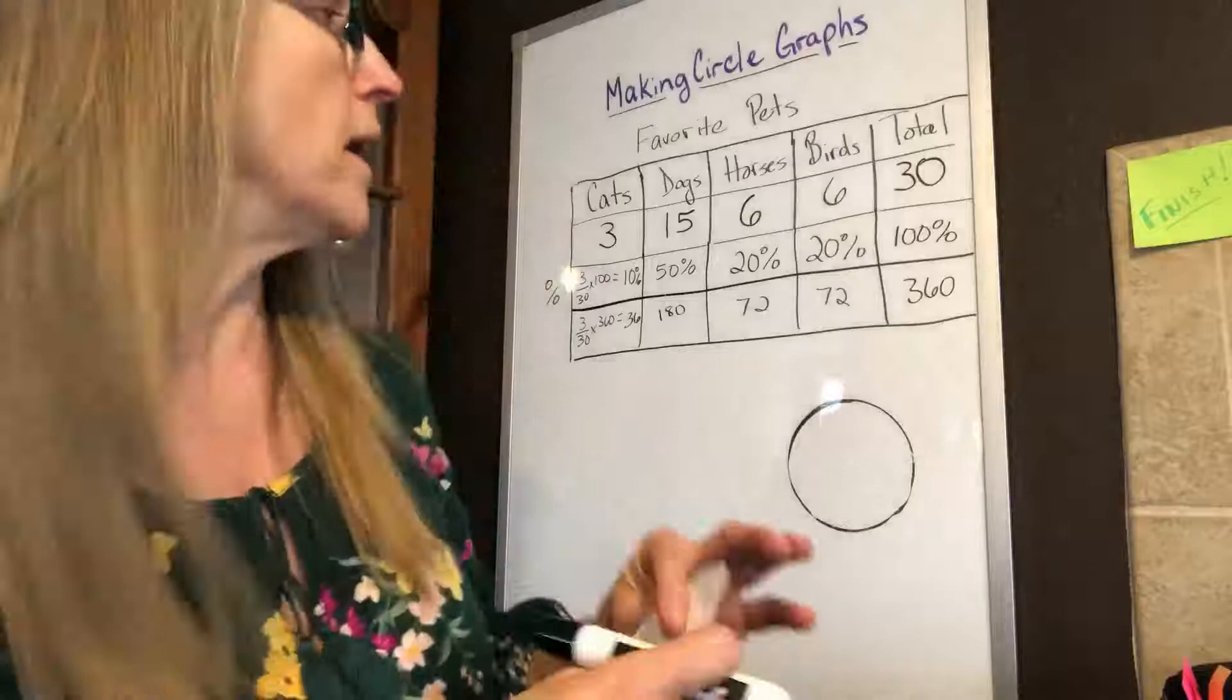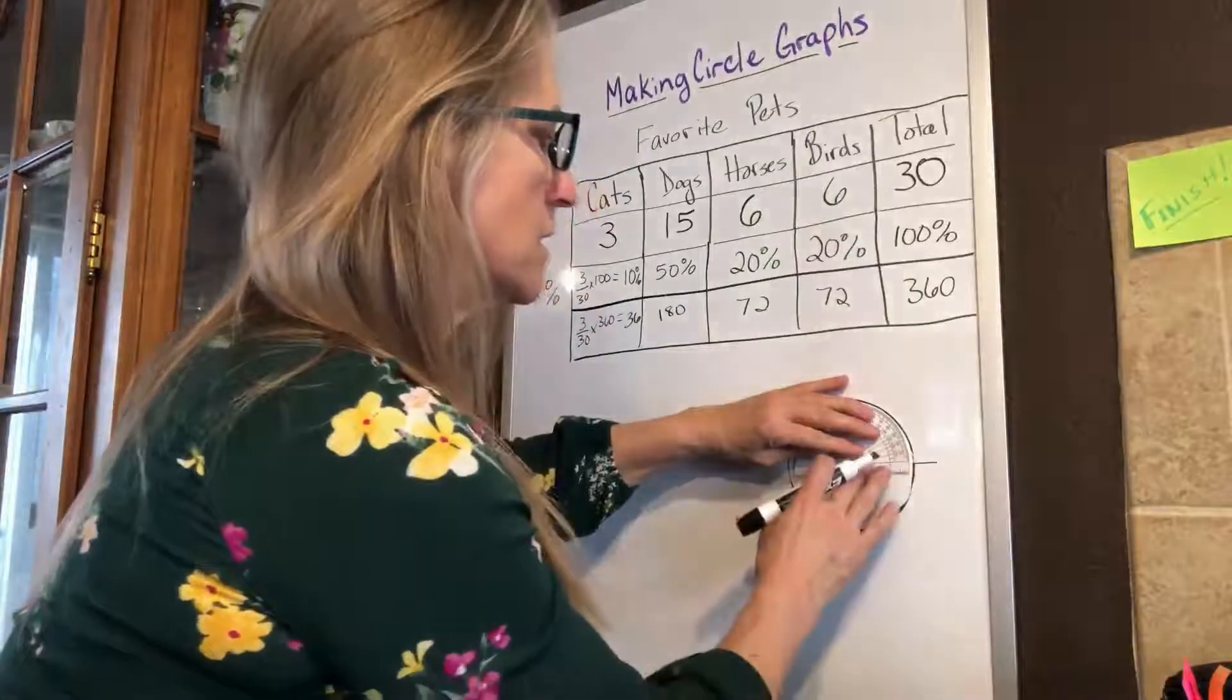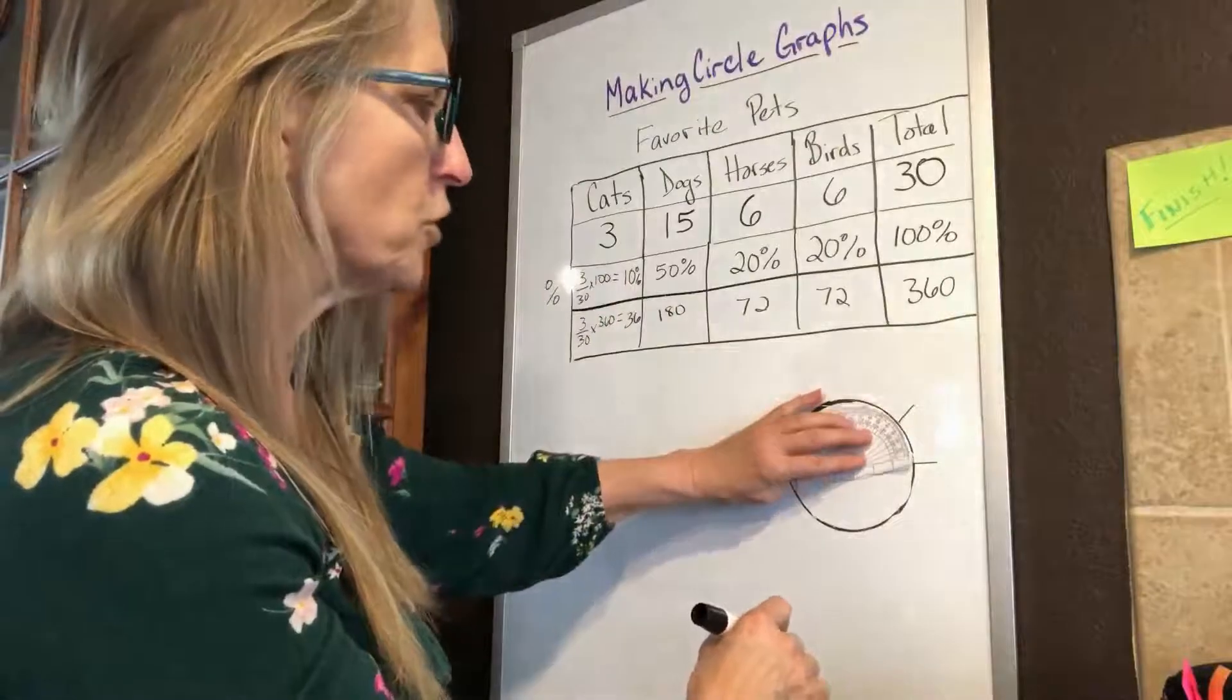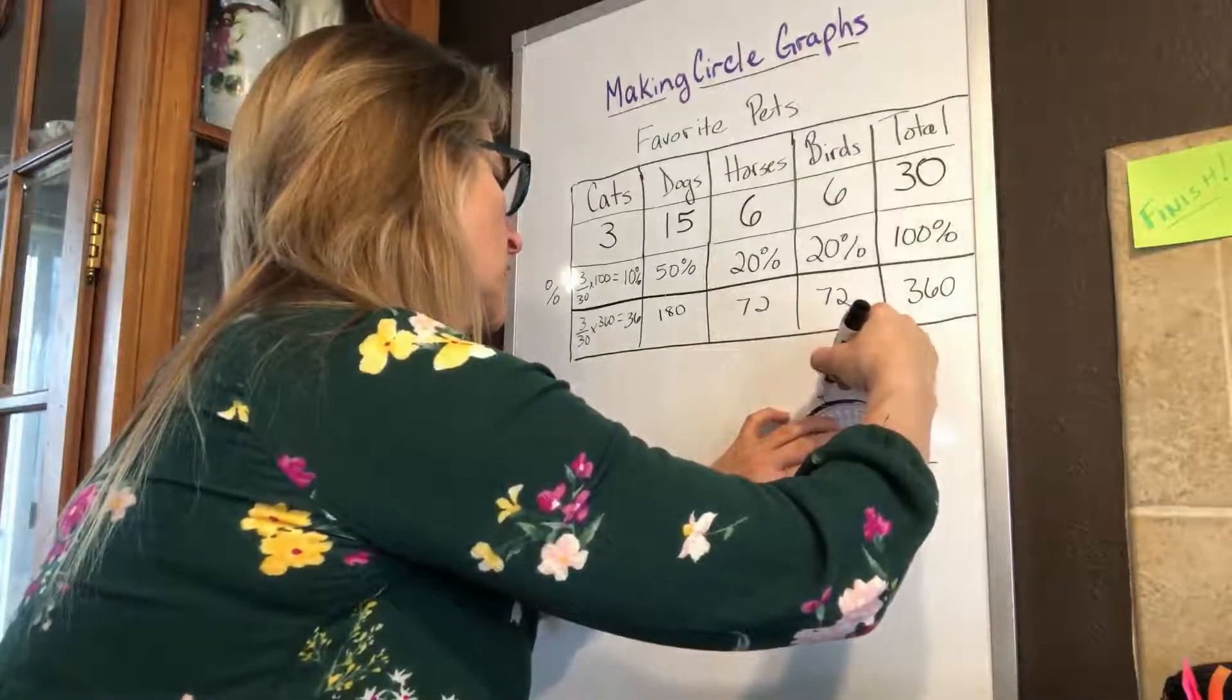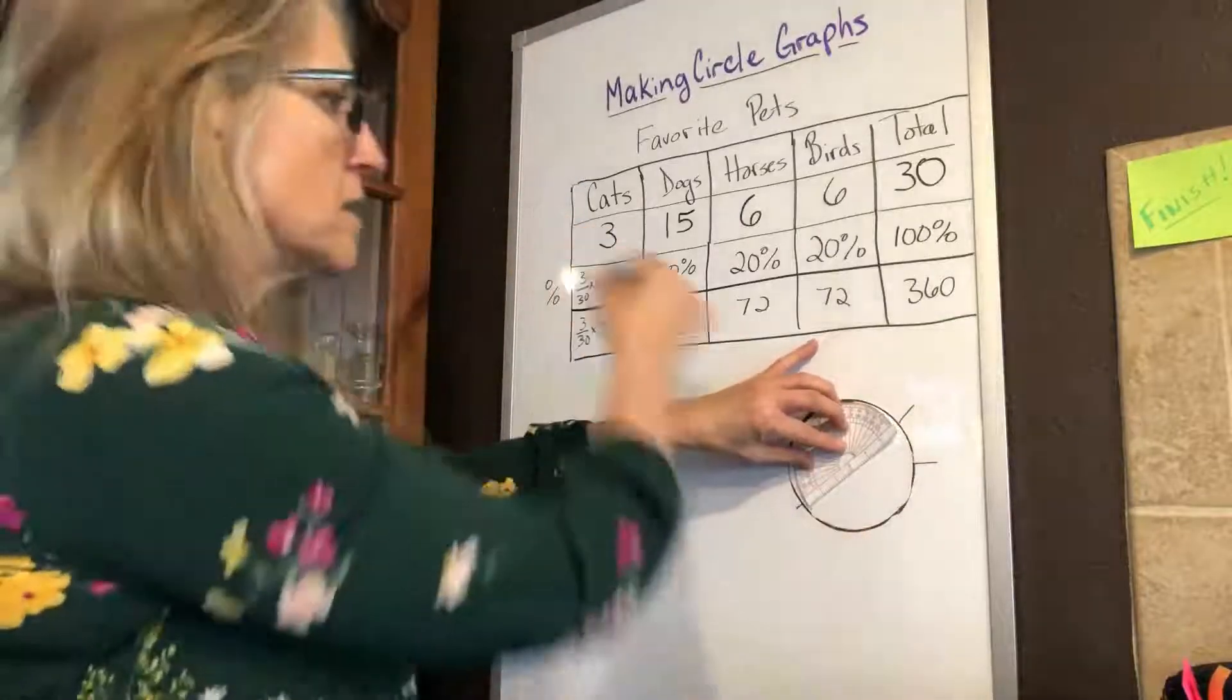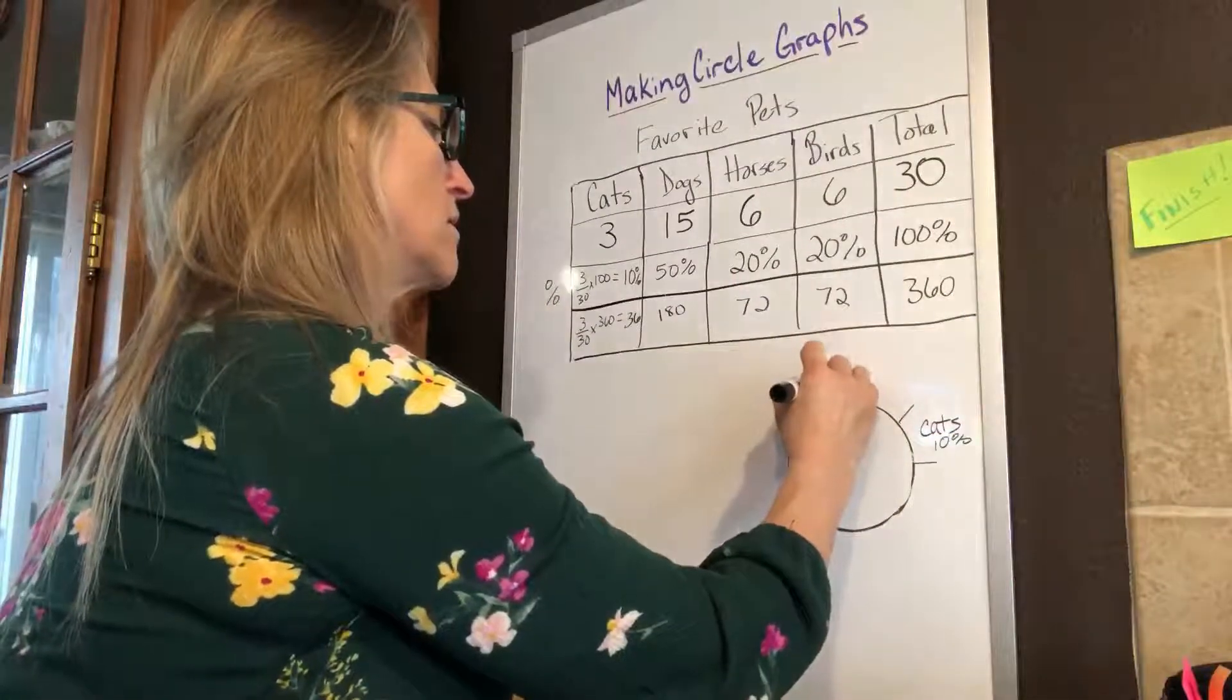So now I'm going to take my protractor, just like you should because you can download it on our assignment. I'm going to make my zero mark for my circle where my circle begins. That's zero, right? And my first measurement is going to be 36 degrees. So that's going to be right about here. Then I'm going to add 72 to that. So I can turn my protractor so my zero is now there and just go to 72, or I could add 72 to my 36. Either way, it's going to work fine. Oh, I forgot my 180. Sorry, I'm going to add my 180 to that. So that's going to be clear over here. So this is cats, and that's 10%. And this is dogs, and that's 50%.